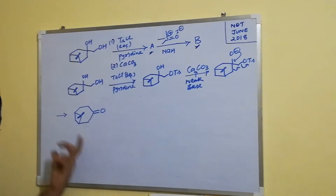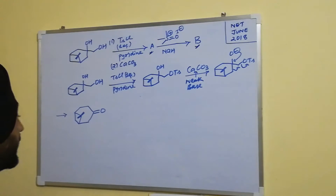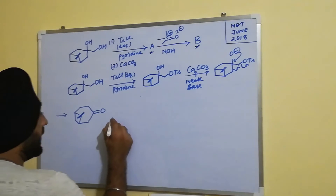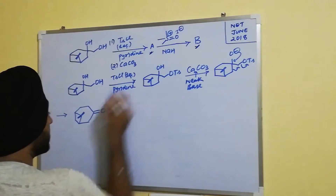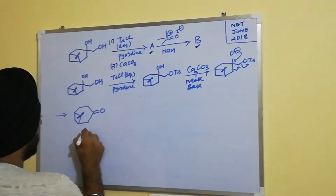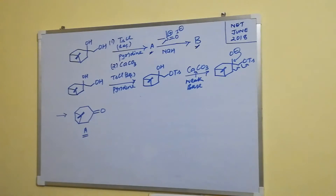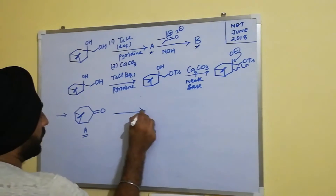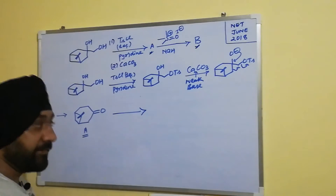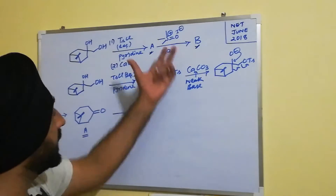We end up getting a seven-membered ring as the product. This is compound A which we obtain from the semi-pinacol rearrangement step.